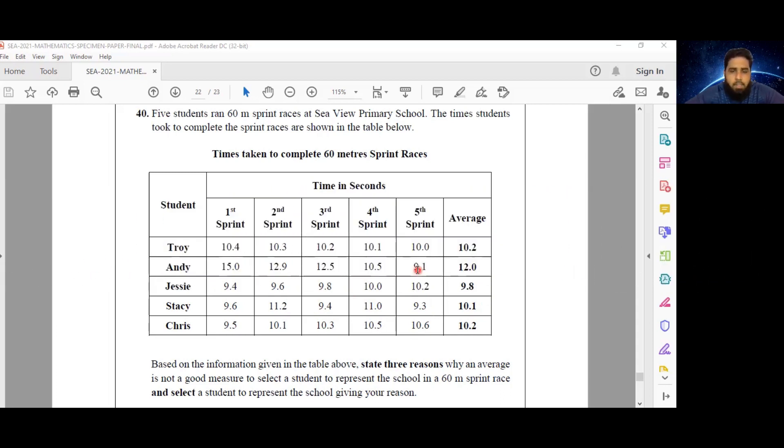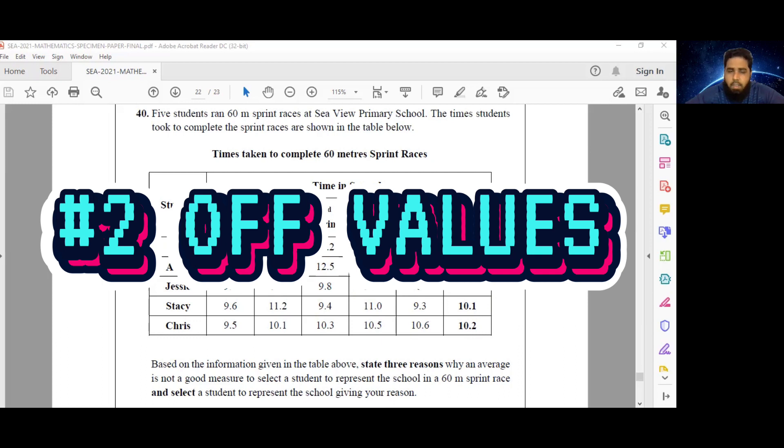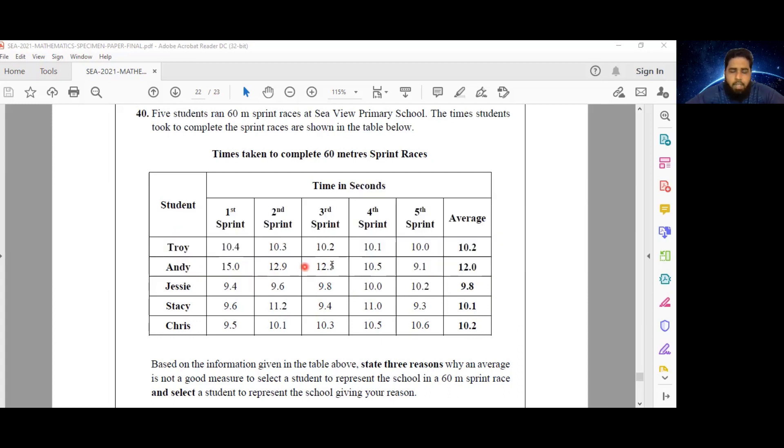So what's something else that could be taking place here? Well, the averages do not account for situations where the average is being impacted by an off value. So let's say somebody ran a really terrible or a really poor sprint because they had a muscle pull or something like that.